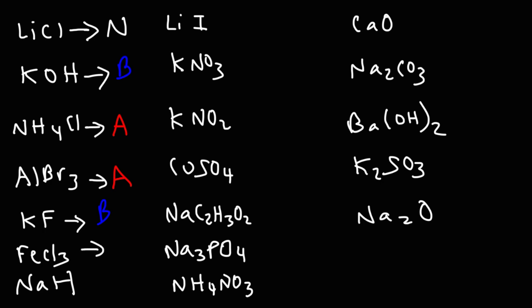FeCl3: Cl- is neutral, but the Fe3+ cation is acidic. Sodium hydride: sodium is neutral (Group 1 alkali metal), but hydride is a strong base. Lithium iodide: both lithium and iodide are neutral. Same thing for potassium nitrate — nitrate is the conjugate base of a strong acid, so nitrate is a neutral ion.